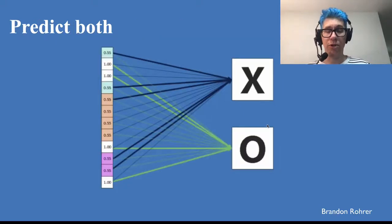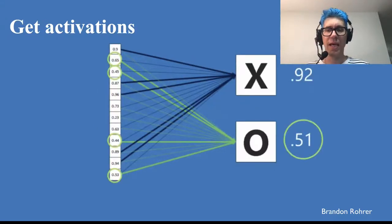Now, we want to predict both, of course, how likely the X is and how likely the O is, and we'd be getting activations for that. We might want the probabilities for the two of them to add up to one, and we already heard about cross-entropy.